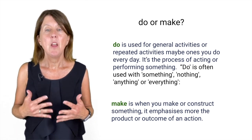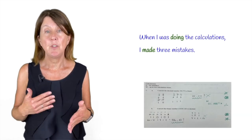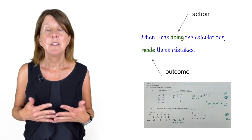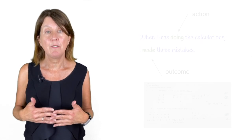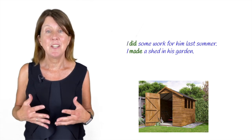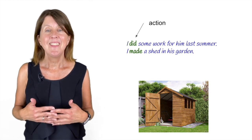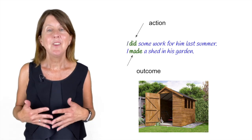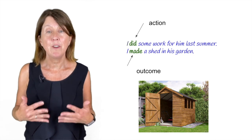For example, when I was doing the calculations, this is an action so we use DO. I made three mistakes - this is the outcome so we use MAKE. Or I did some work for him last summer - this is an action so we use DO. I made a shed in his garden - this is the outcome so we use MAKE.